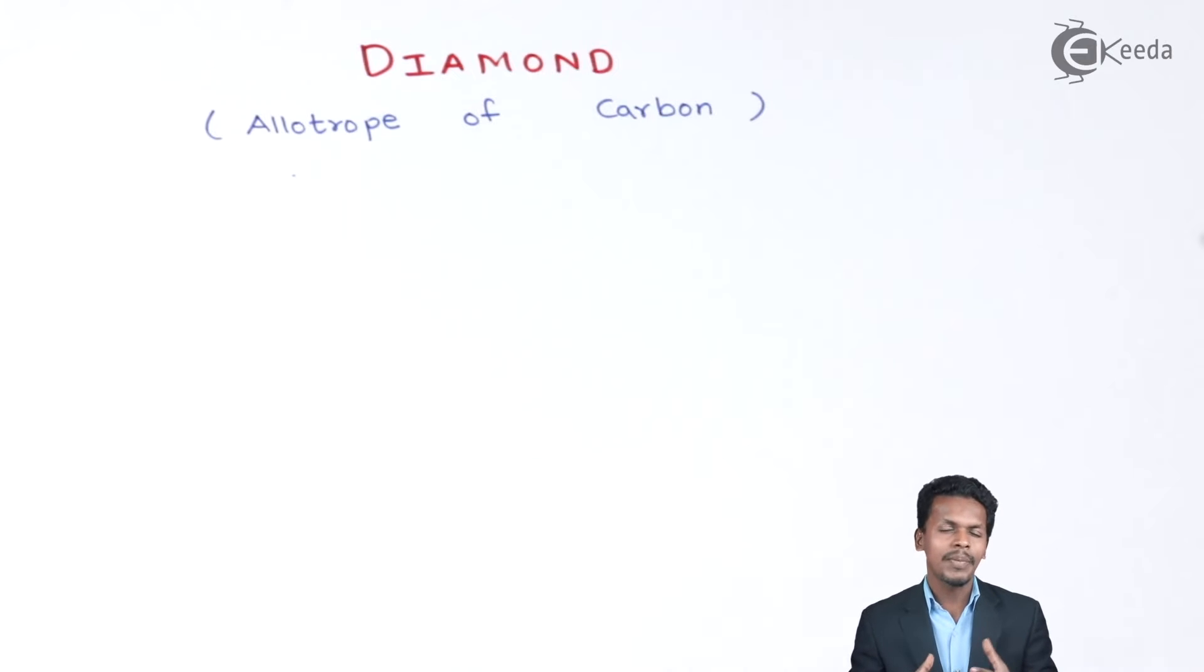Because of this, each carbon atom is linked with other carbon atoms forming a tetrahedral structure. The carbon in diamond forms sp3 hybridization.